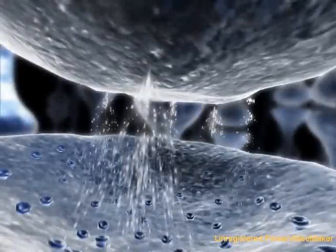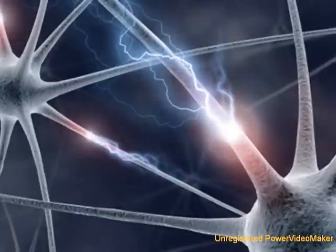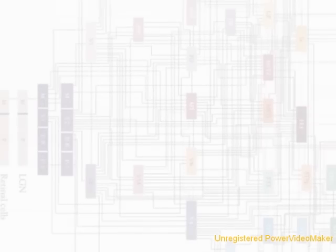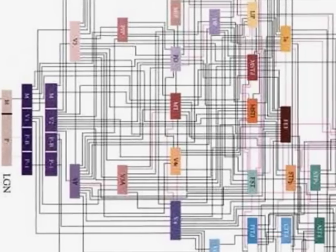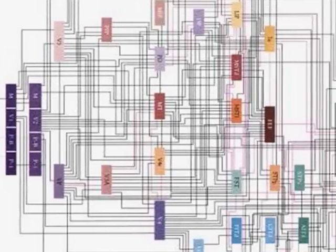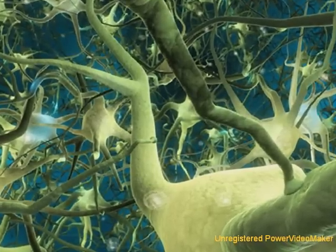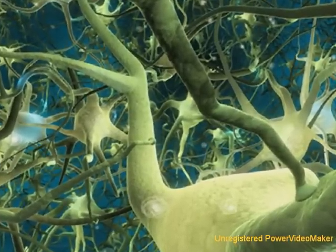Without synapses, neurons couldn't transmit information between them. Without neurons, there would be no electrical activity. And without a specific circuit, no meaningful computation can be performed. Another wonderful example of irreducible complexity. So how did it all evolve?